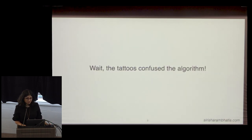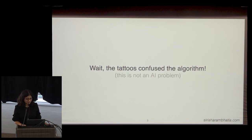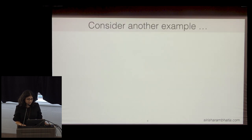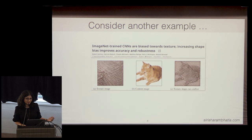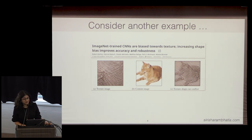What that means is that tattoos can actually be mistaken for skin cancer. You might say this is a tattoo problem and not an AI problem. Let's take another example from the same year: we were still thinking about what these models are actually learning. In 2019 we were still asking this fundamental question.